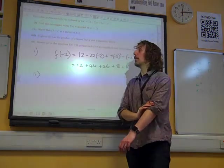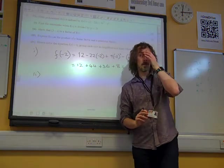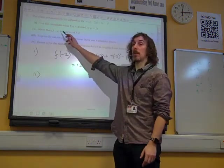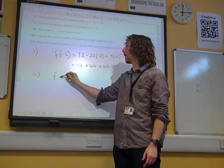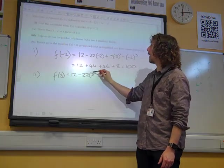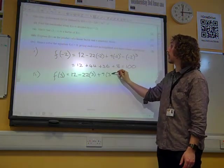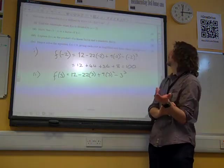Show that 3 minus x is a factor. Well, remember to use the factor theorem we're using the x value that makes the bracket 0. So it's f of 3 in this case, which is 12 minus 22 threes plus 9 times 3 squared minus 3 cubed. And we've got to, it's only one mark,